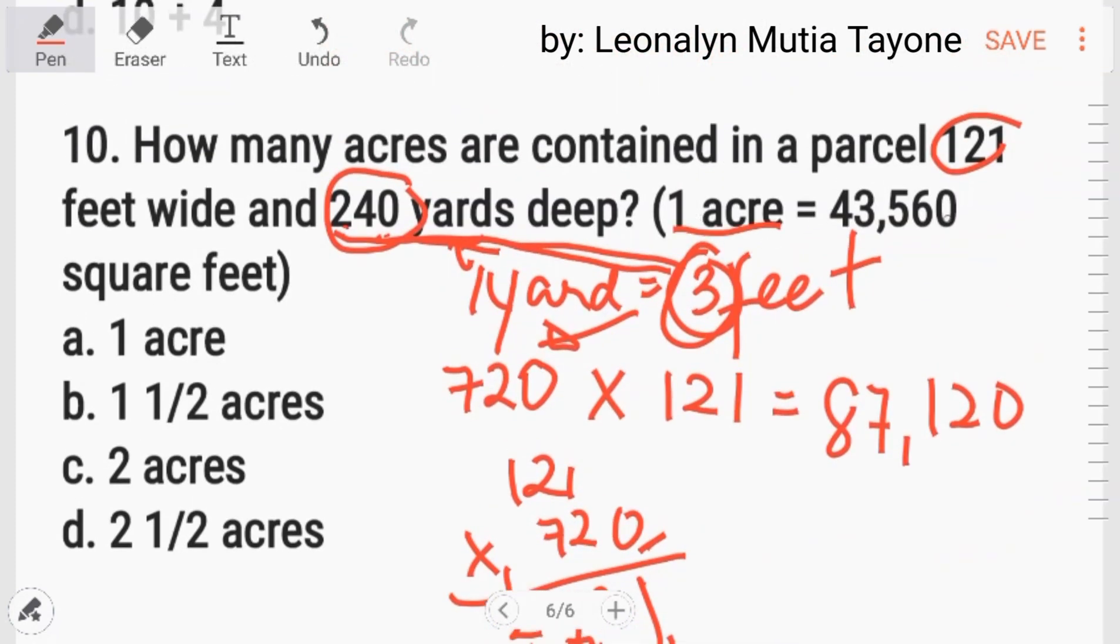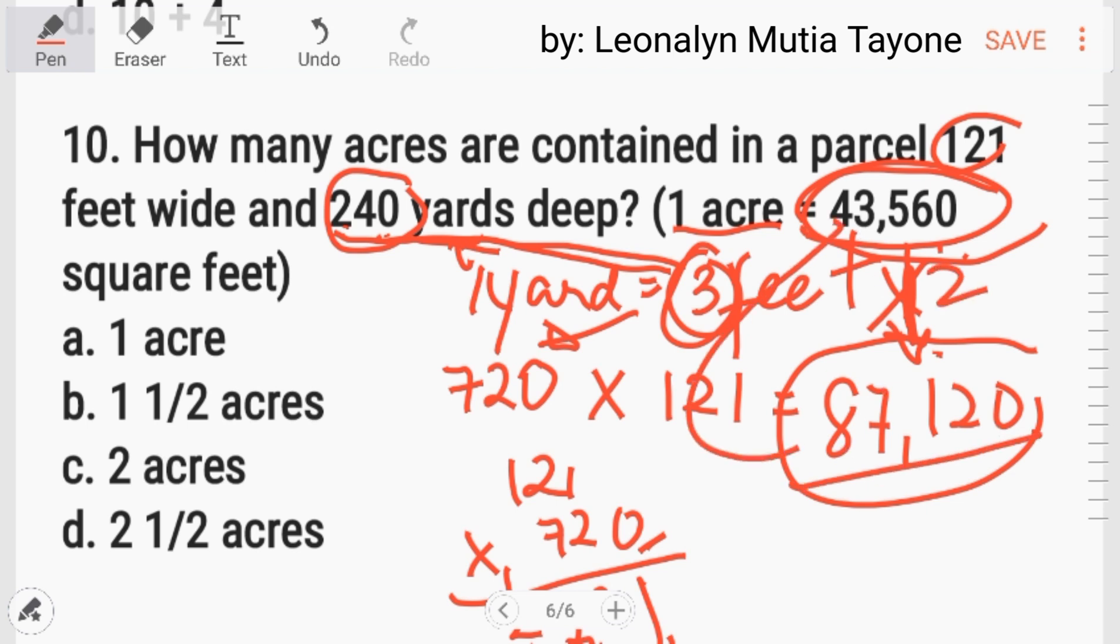Nasa given na one acre is equivalent to 43,560. Ilang 43,2? Bali, mag-divide tayo. 87,120 divided by 43,560. Kung, just look at it closely. One half lang siya dito. Ipig sabihin, mag-multiply tayo ng two. Or, kung mag-divide tayo dito, ang answer dyan ay two. So, the answer is letter C, two acres.